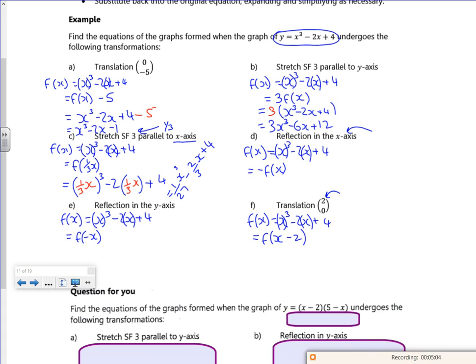On D, a reflection in the x-axis is minus everything, because I'm multiplying by minus 1. So that would give me minus x cubed plus 2x minus 4.